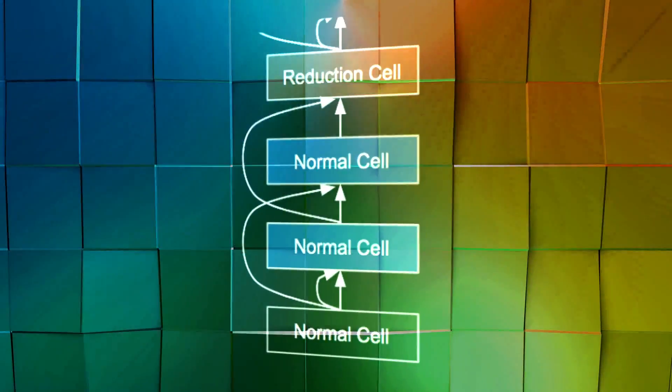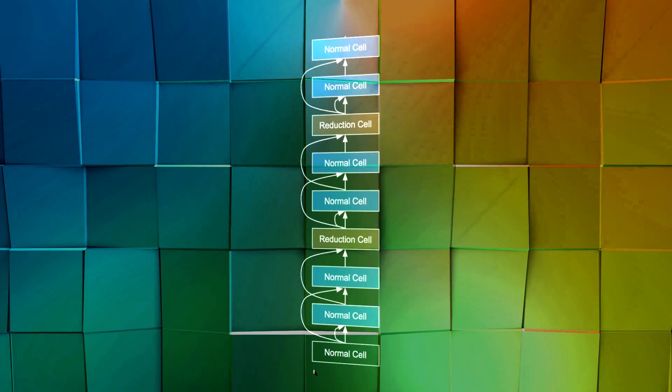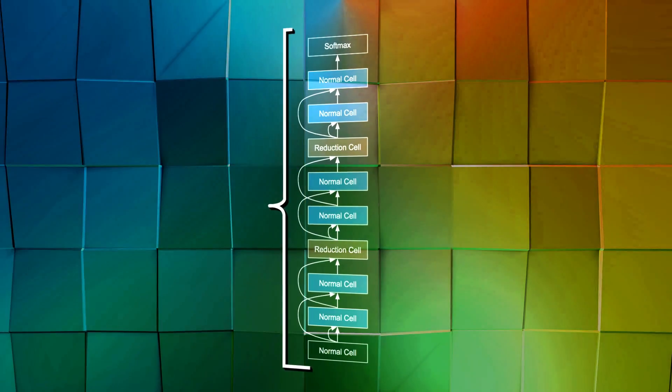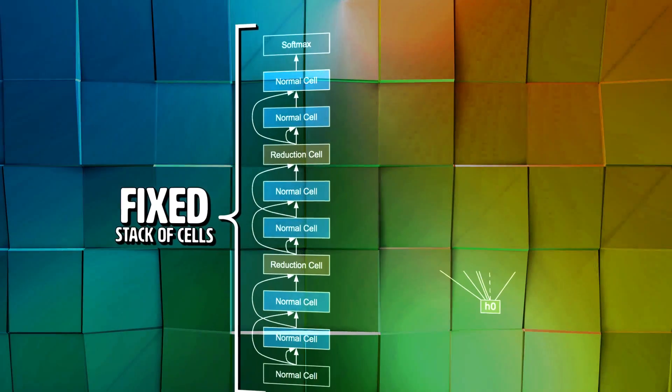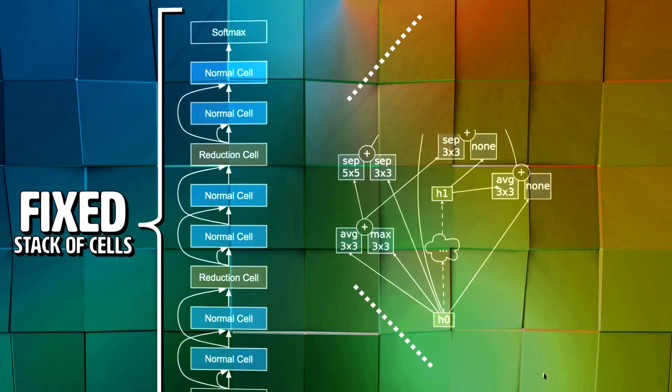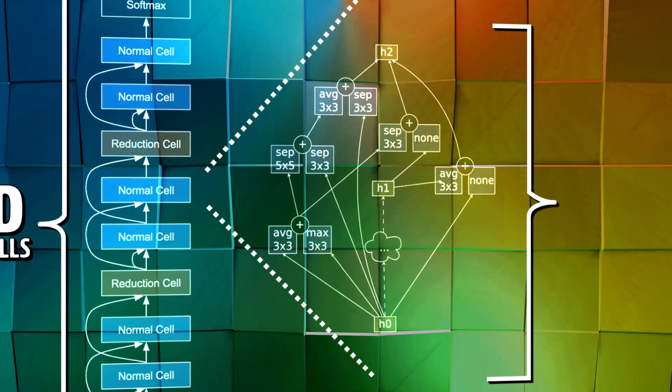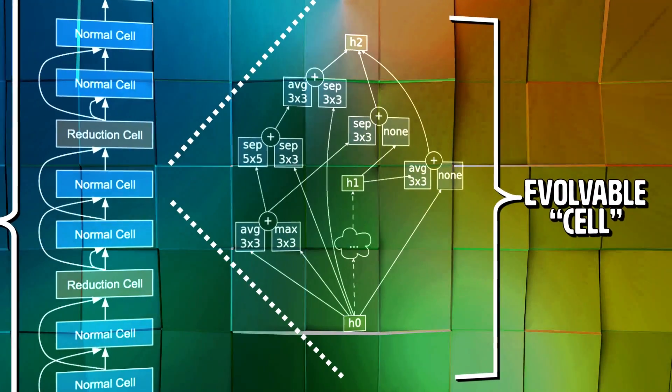In a later experiment, they used a fixed stack of repeated modules called cells. The number of cells stayed the same, but the architecture of each cell mutated over time. They also decided to use a specific form of regularization to improve the network's accuracy.